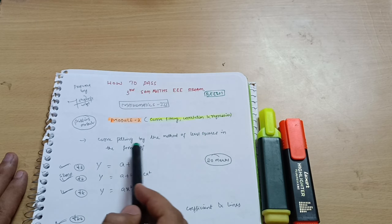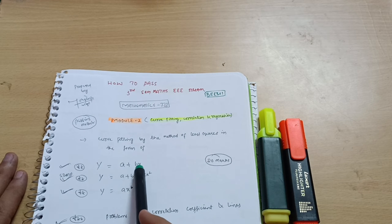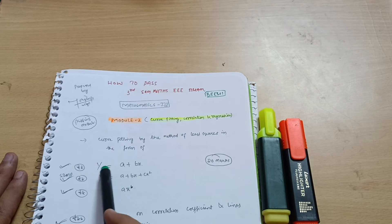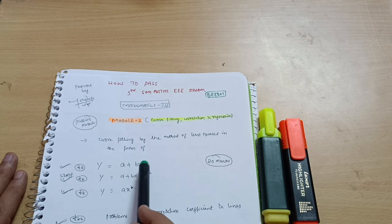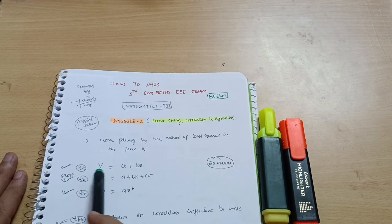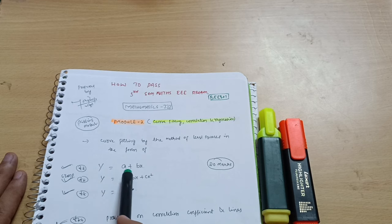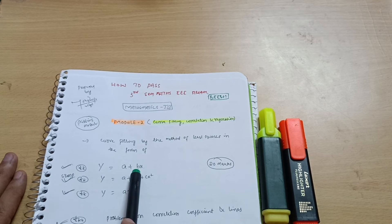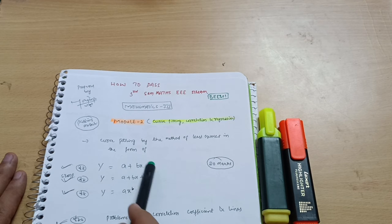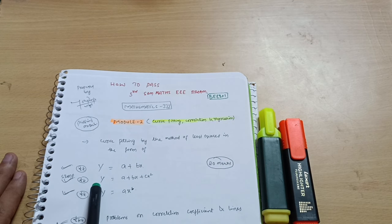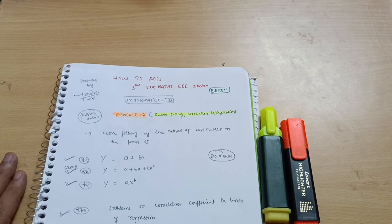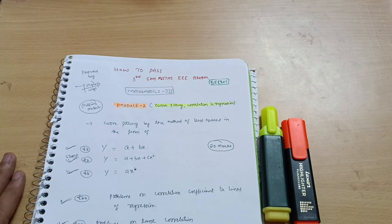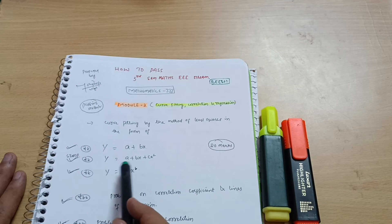Curve fitting by the method of least squares in the form of y equals a plus bx. Questions will be like fit a curve y equals a plus bx. The table will be given. You are supposed to fit this particular equation in which you are supposed to calculate a and b value only. I have uploaded the problems on these three concepts also. I will provide the link in the description box so that you can avail these videos. It's very simple, you should not miss this.